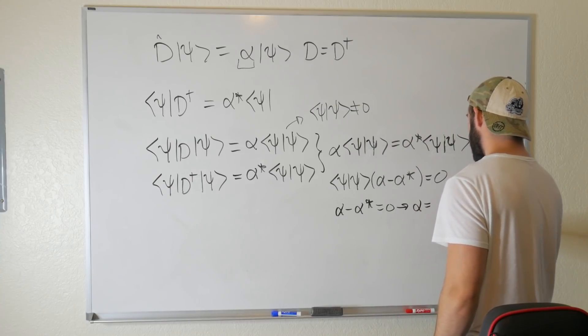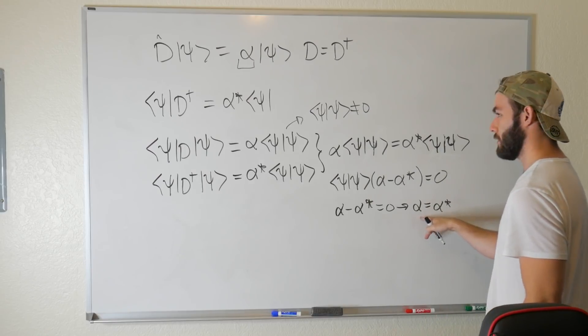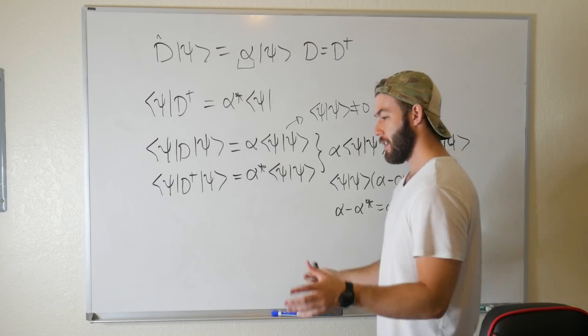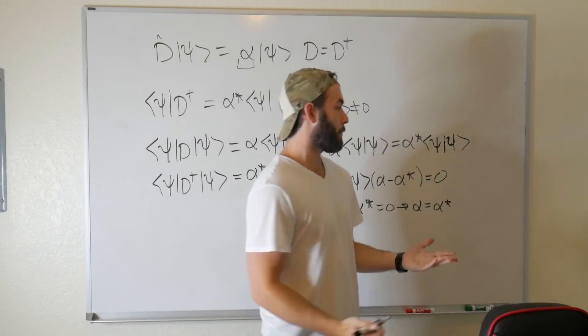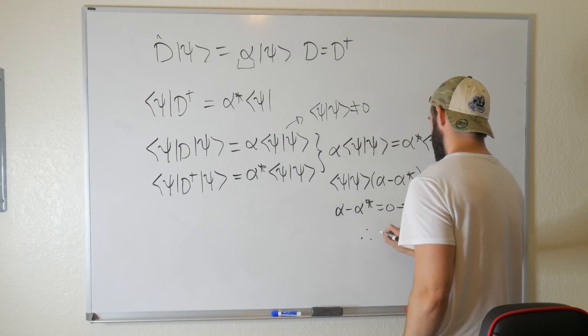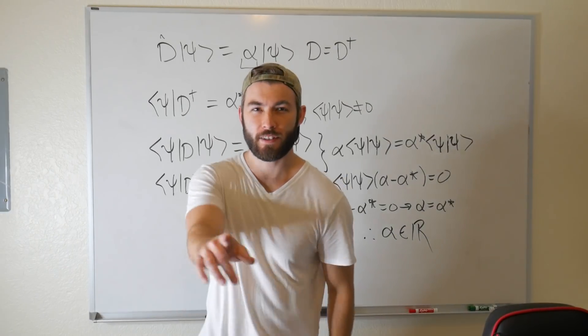Which means that α equals α*. And the only numbers that satisfy this relation, the only numbers that satisfy a number being equal to its complex conjugate is a real number. Therefore, alpha is the realist. Hope you guys enjoyed this video.